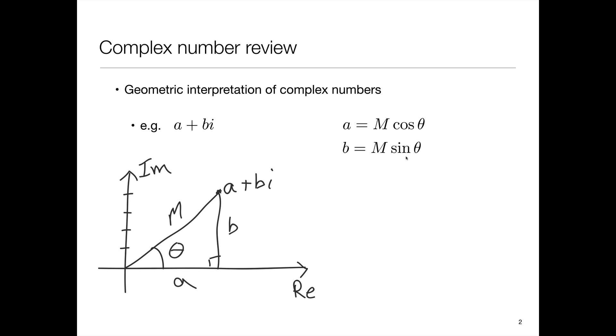So if we were given A and B and we wanted to calculate m and theta, we can just use Pythagoras and a bit of trig to find that m is the square root of a squared plus b squared and theta is the arc tan of b over a.